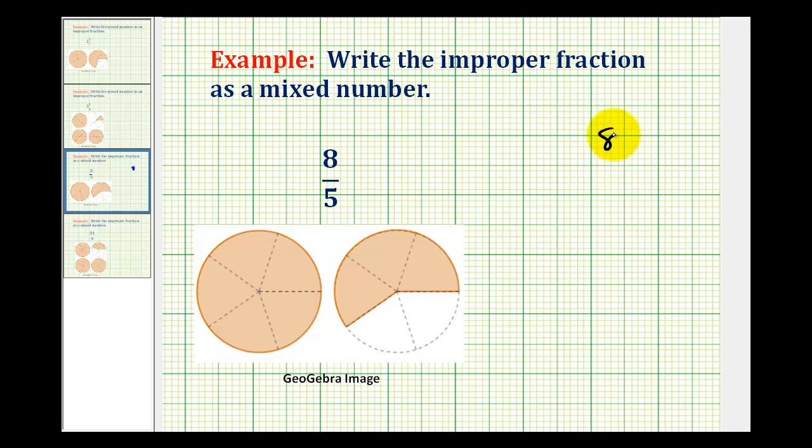So we have eight divided by five, and there's one five in eight, and we have a remainder of three.